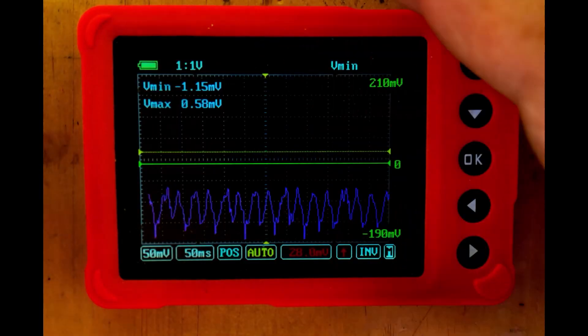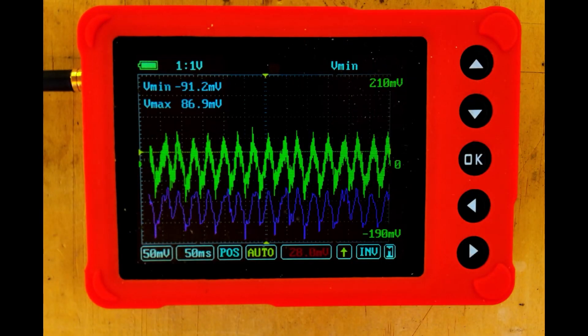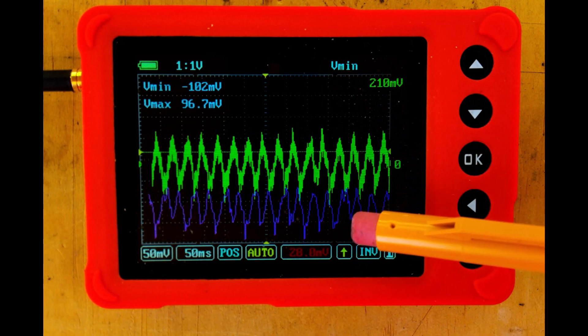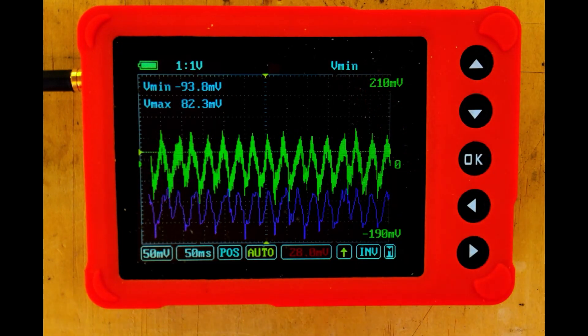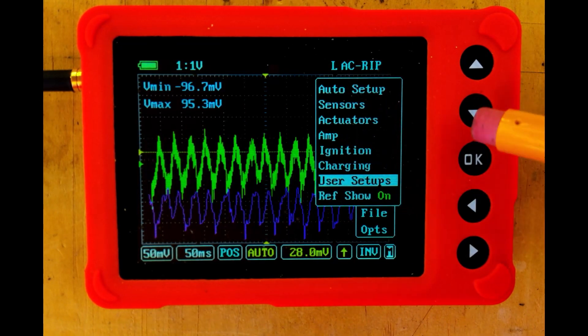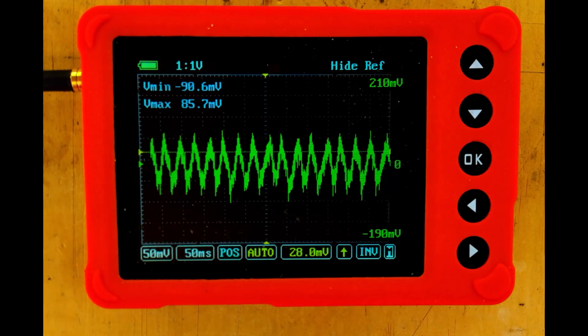With the car running, let's plug the Uscope into the leads, and now we can see that we have our AC ripple, and we can also compare that to our reference file. And if we want to turn that reference file off, we can just come down to Presets, move it down to Reference Show, and turn that off. And now we have just our pattern.